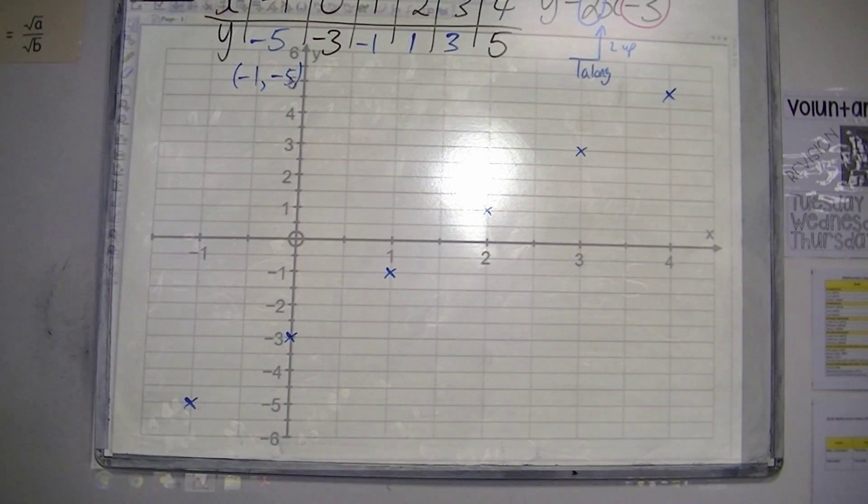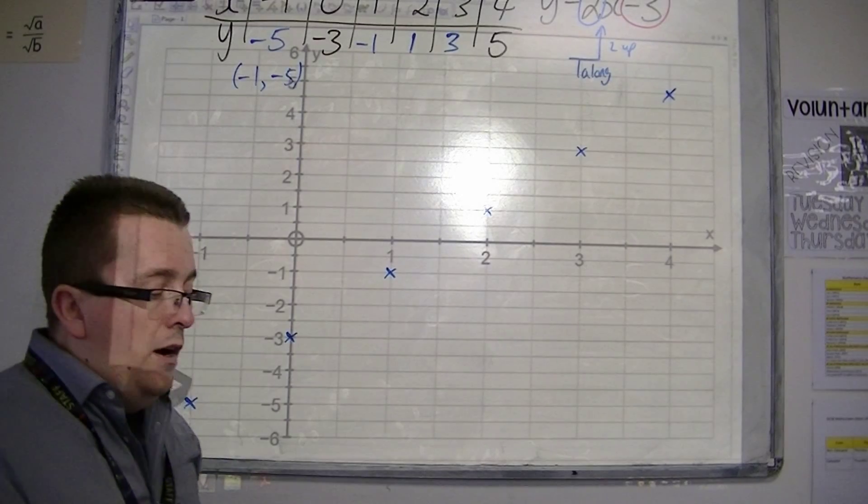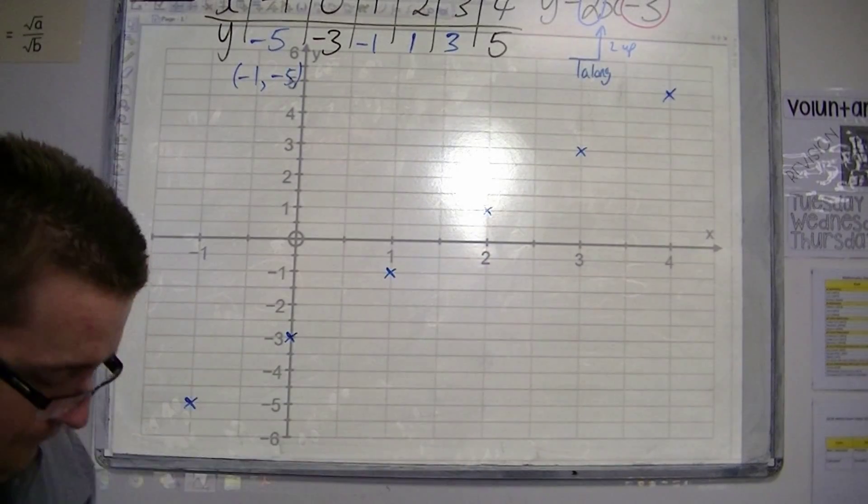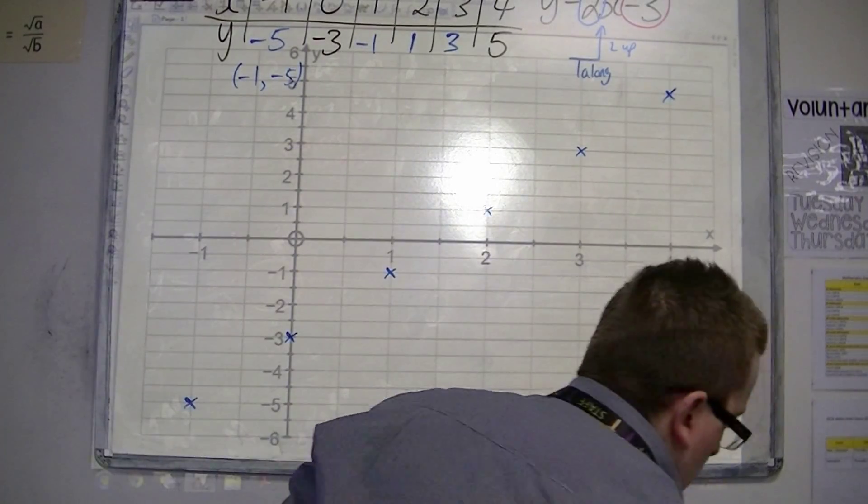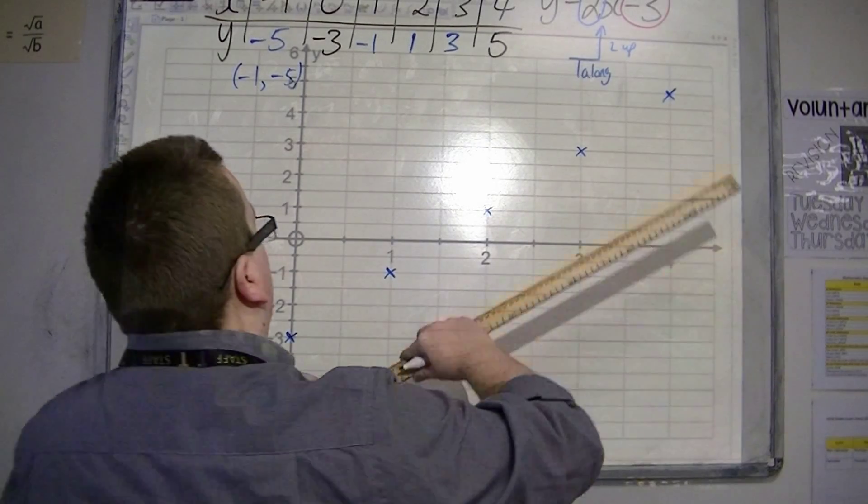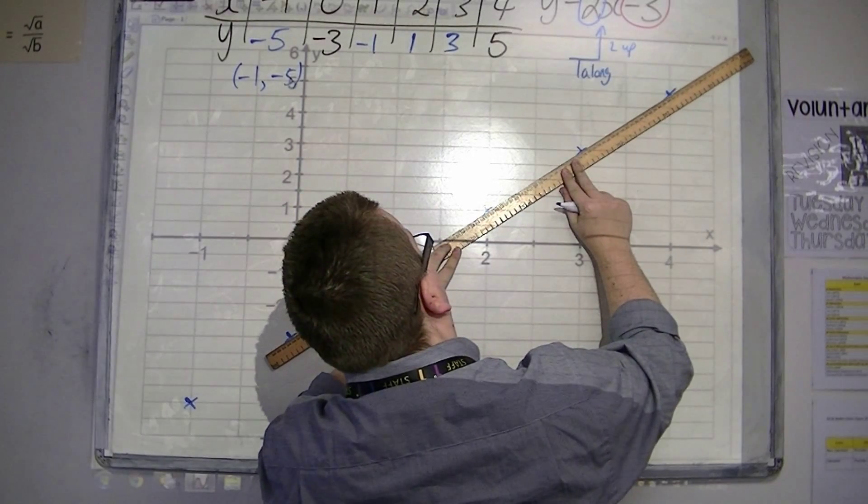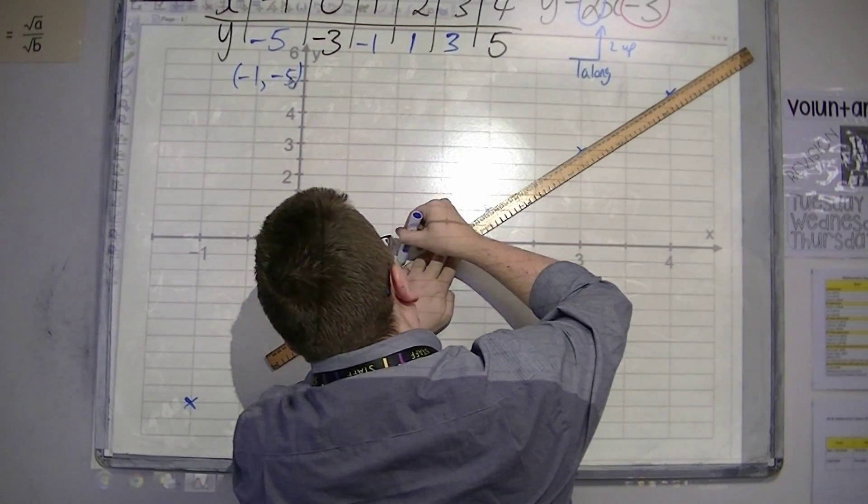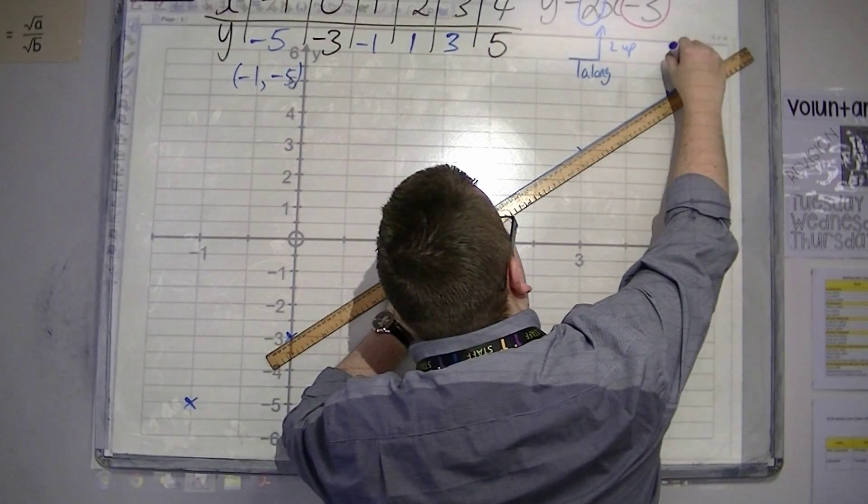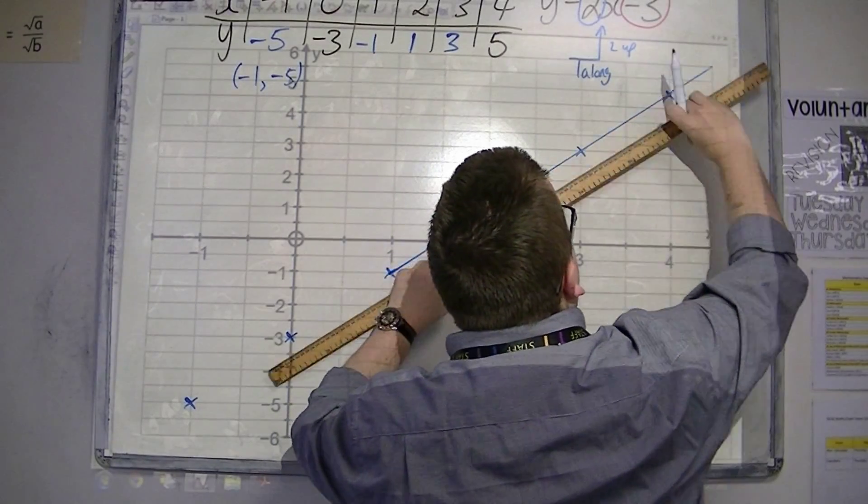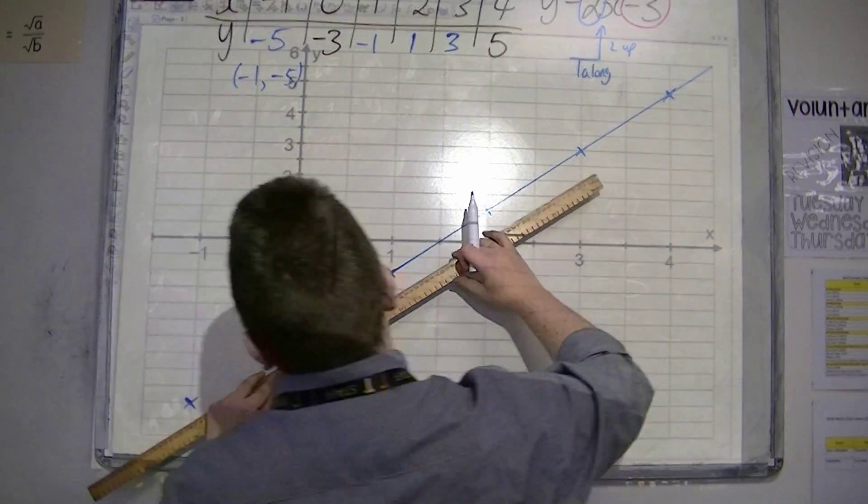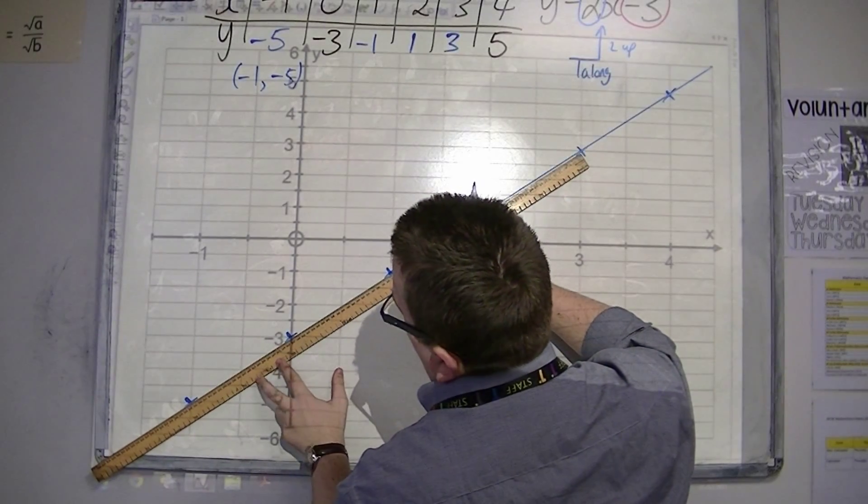Okay, so those are my points. I then draw the line, making sure that my line goes nicely through the points, and I continue the line to the edges of the graph that I've been given.